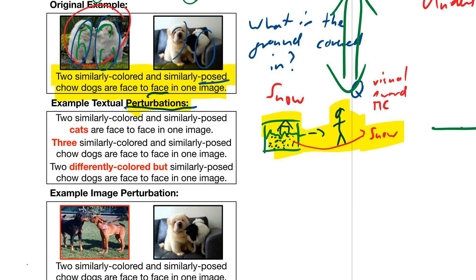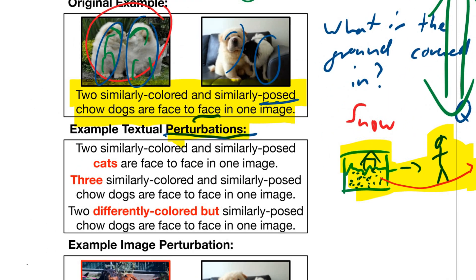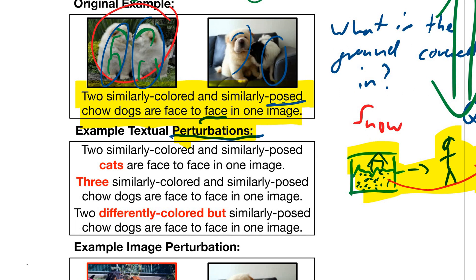This is different from adversarial examples. In adversarial examples you would want to perturb a sample such that it is still the same, but to the classifier it's different. Here you have the opposite goal. You want to make something that means kind of the opposite, but you want to test whether your classifier can pick up on that. So in this case one example would be two similarly colored and similarly posed cats instead of dogs. Or face to face in one image, that would change the label. Whereas before the answer was yes that's a correct sentence, now it's no that's not a correct sentence. There are no cats in these images.